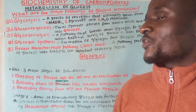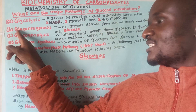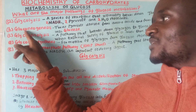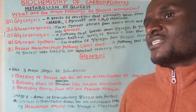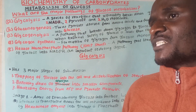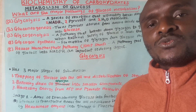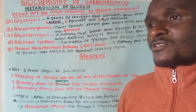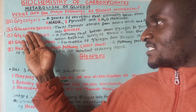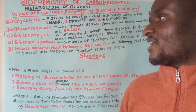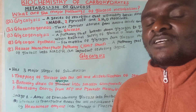Next is gluconeogenesis. From the word 'gluconeogenesis' we can identify 'glucose' and 'genesis.' This is a pathway that turns pyruvate — derived from amino acids and also from glycolysis — into glucose. Some people look at it as a reversed process of glycolysis.